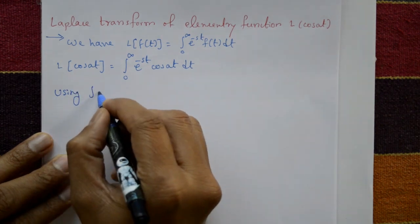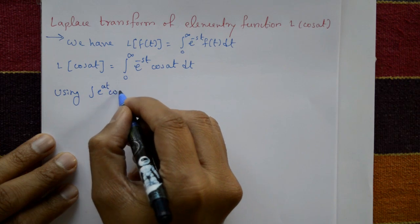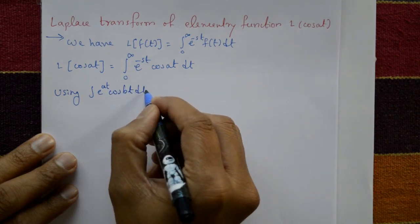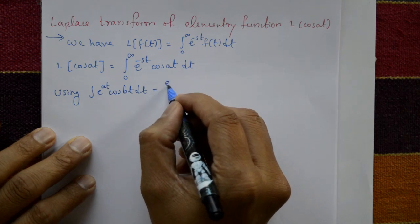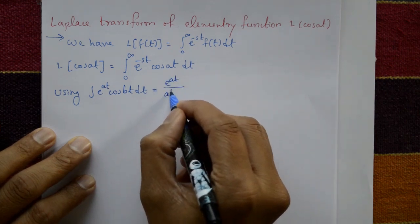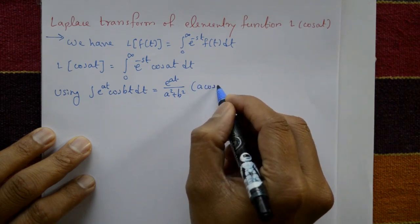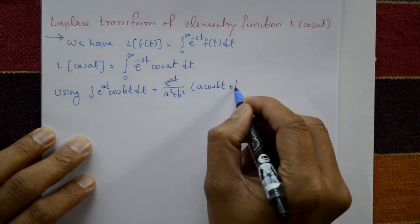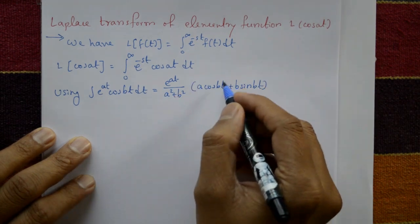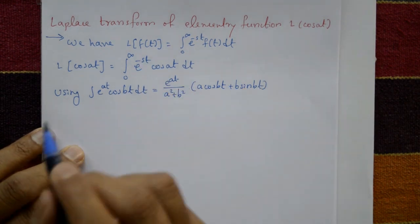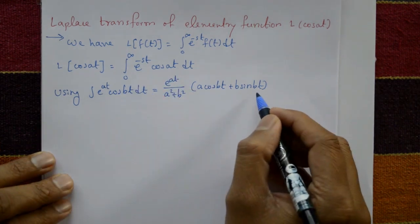The standard formula is: the integral of e^(at) times cos(bt) dt equals e^(at) divided by (a² + b²), multiplied by (a·cos(bt) + b·sin(bt)). In our case, a means minus s and b means a, so we substitute these values into the formula.